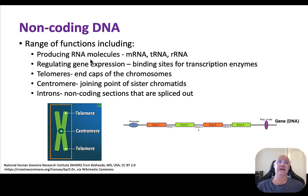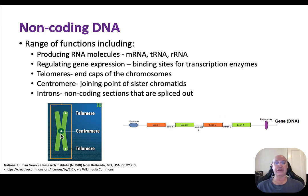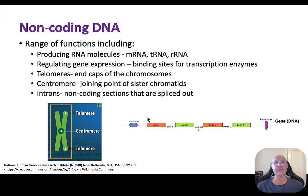We're going to talk about non-coding DNA in a lot more detail in future videos. Non-coding DNA is involved in producing telomeres, which are the end caps on the chromosomes — they protect the chromosomes and increase the longevity of a cell. The centromere is the point that joins sister chromatids, and its production is regulated by non-coding DNA. Also, the non-coding sections that are removed during protein synthesis are called introns — these are the non-coding sections that are spliced out. Non-coding DNA is super important.